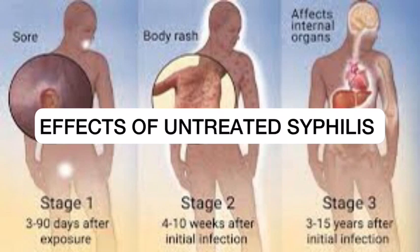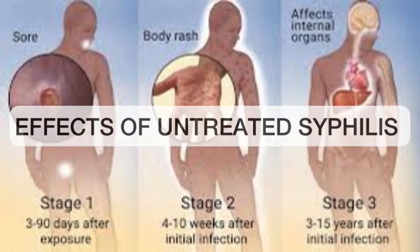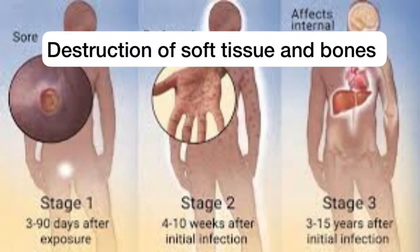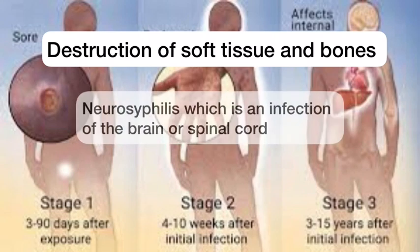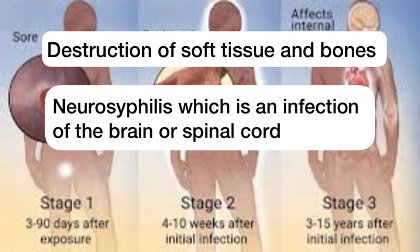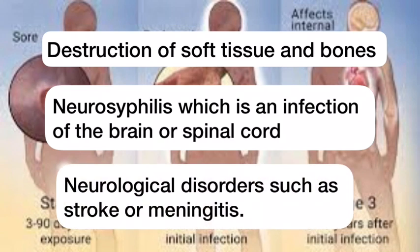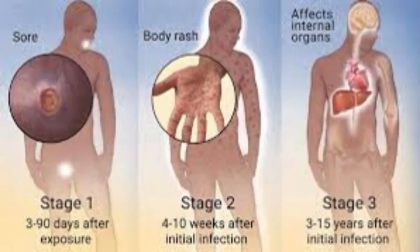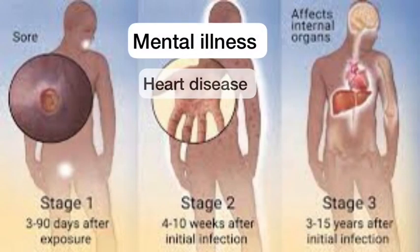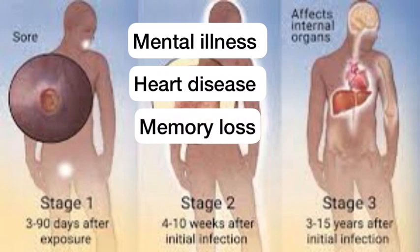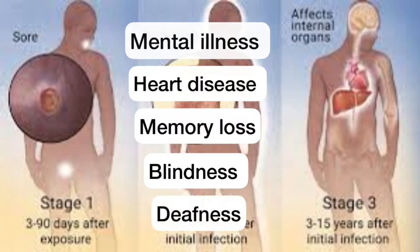Effects of untreated syphilis. When syphilis stays in the body for long and finally gets to the tertiary stage, a set of conditions come into play. These include: destruction of soft tissue and bones, neurosyphilis — which is an infection of the brain or spinal cord — neurological disorders such as stroke or meningitis, mental illness, heart disease, memory loss, blindness, and deafness.